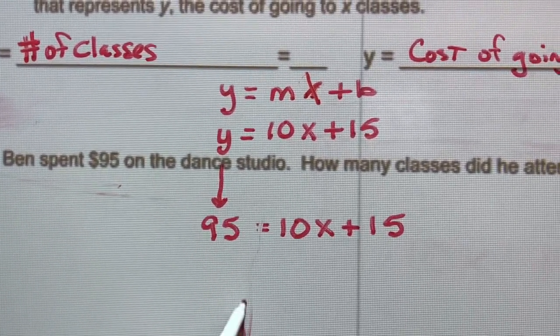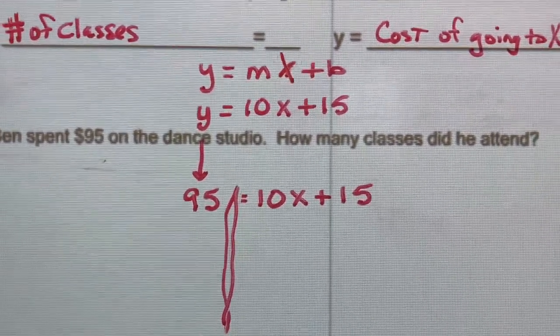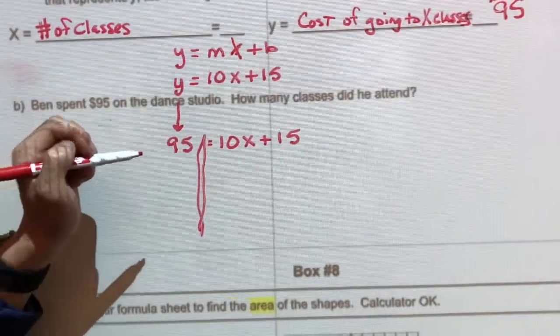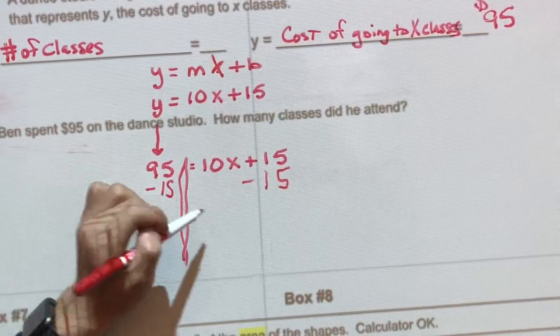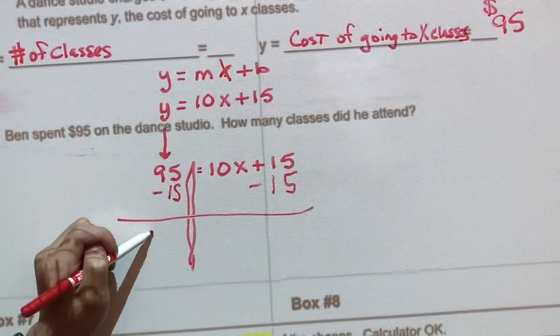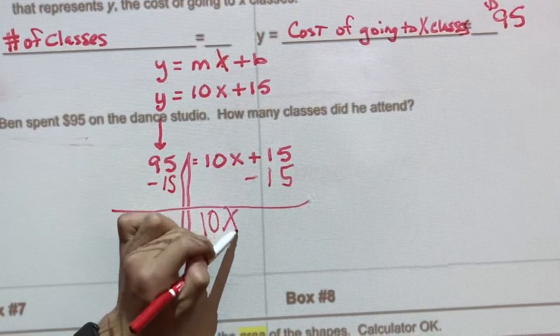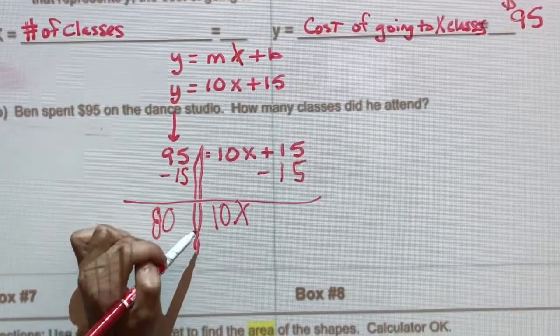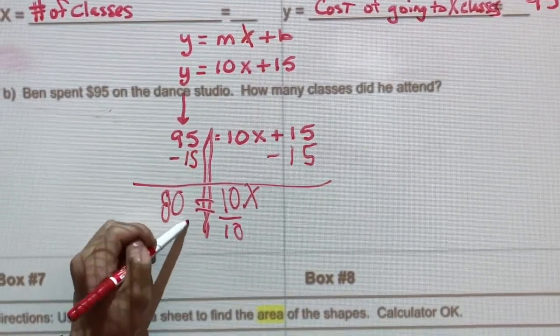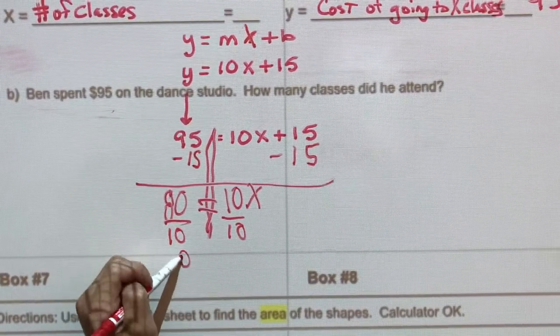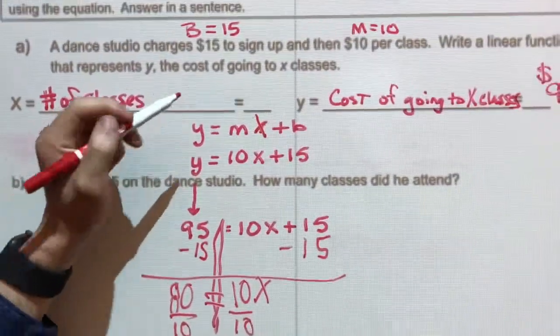And now we're going to solve it. What are you going to solve for? We're going to solve for x, the number of classes. So minus 15. I like how you have everything lined up here. Divide by 10. What goes on that line? Equals sign. Good. And then divide by 10, which equals 8, equals x, which is the number of classes. All right, let's get credit.